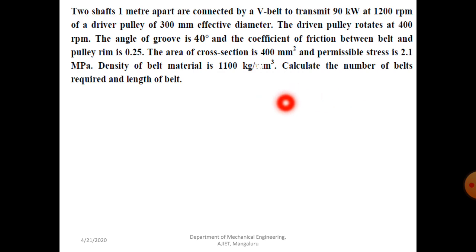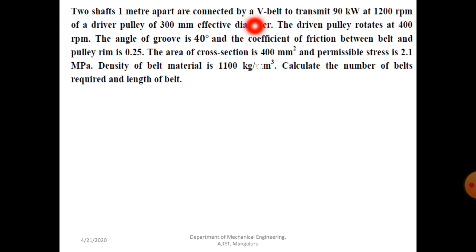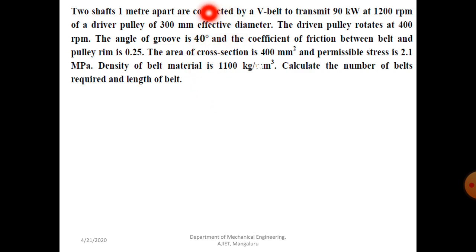This is a Type 1 problem. Usually the problem will mention which type of belt. If they are not mentioning V-belt explicitly, they will mention the angle of groove. If angle of groove is given, it is always a V-belt problem — we have to assume it is V-belt.